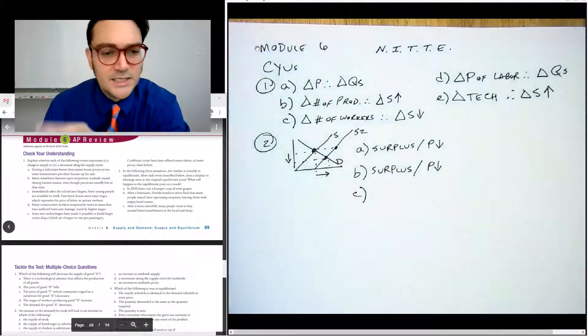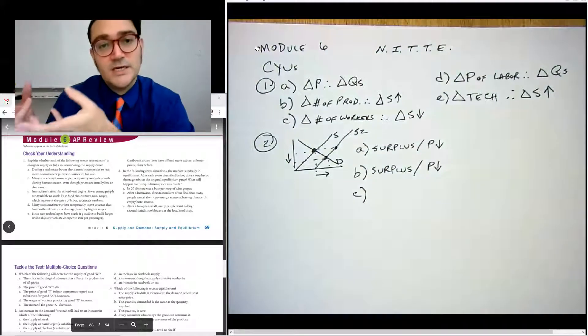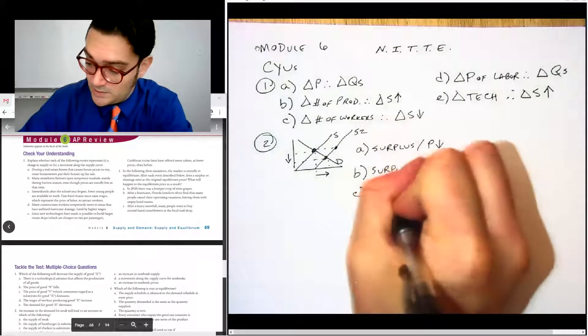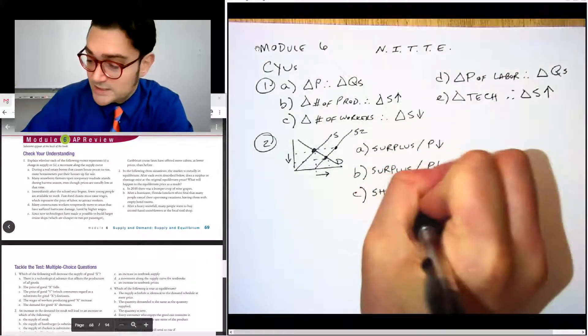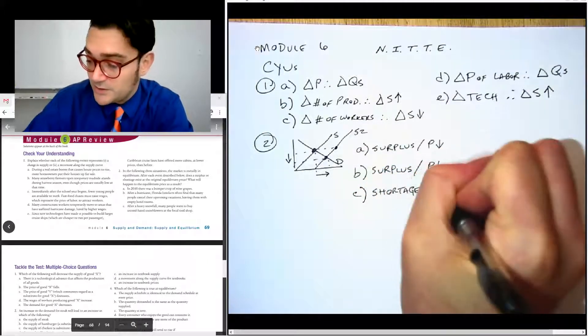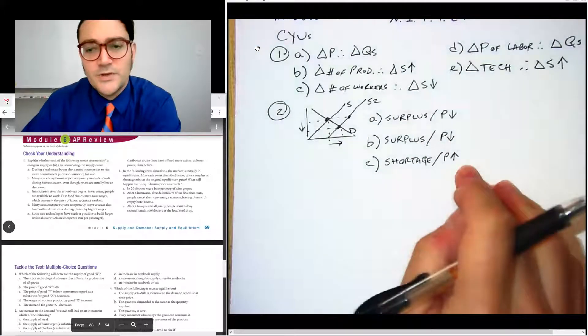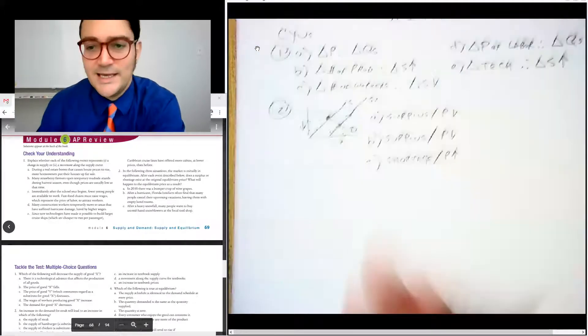And for C after a heavy snowfall, many people want to buy secondhand snowblowers. So this one is an unexpected increase in demand. And in which case there would be a shortage and we would expect market price to increase, to clear that. And again, we will have a little bit more lecture on this one. I know I haven't lectured on this topic yet in class.